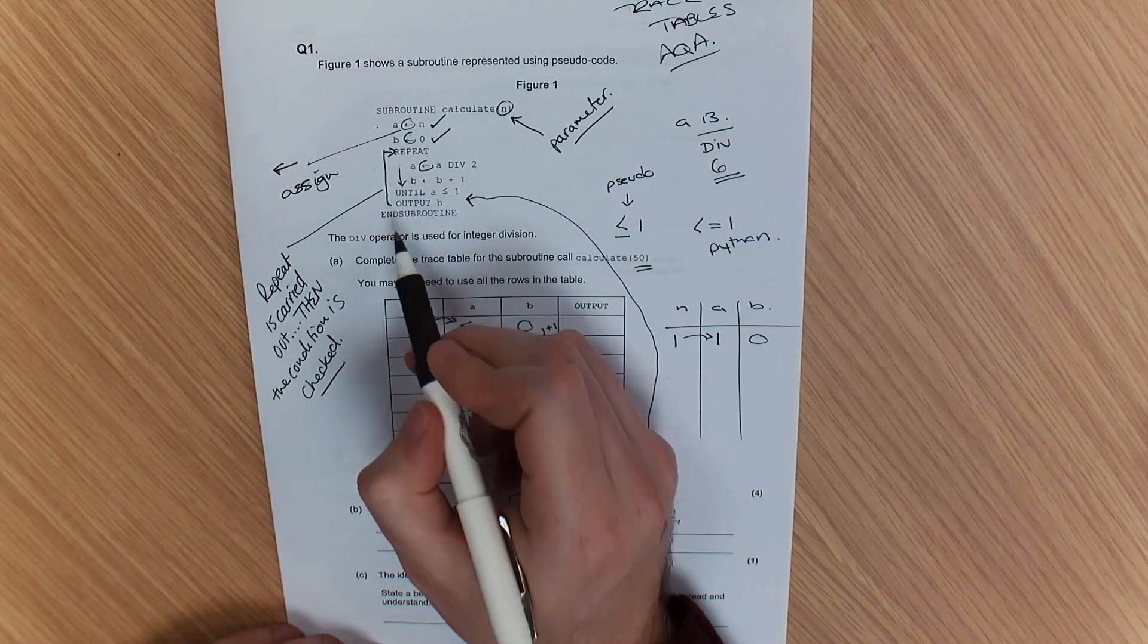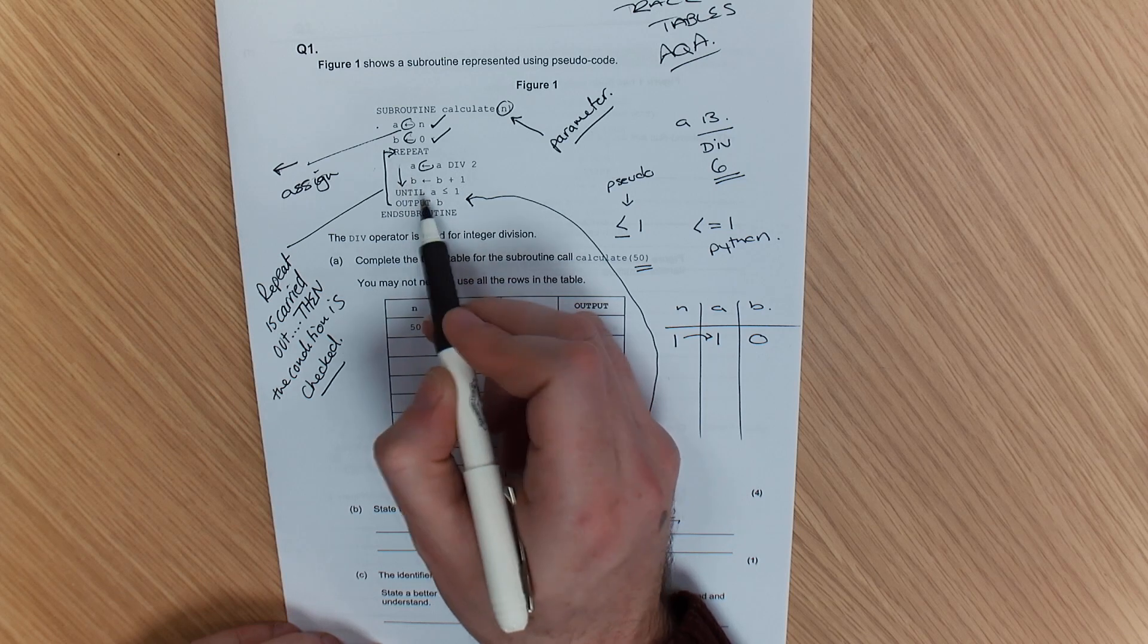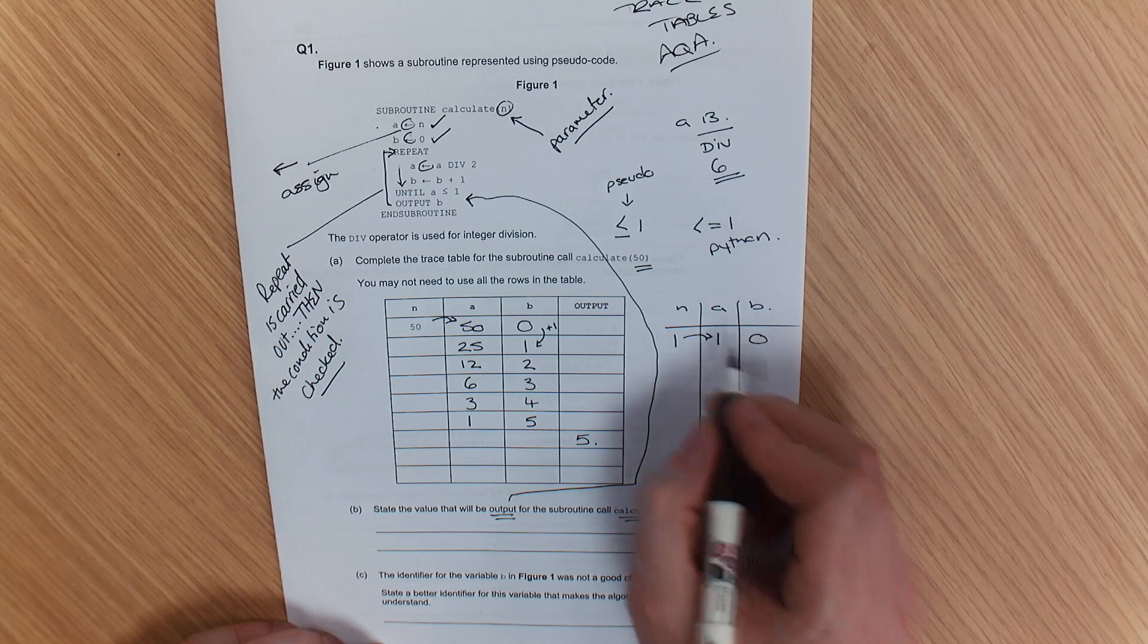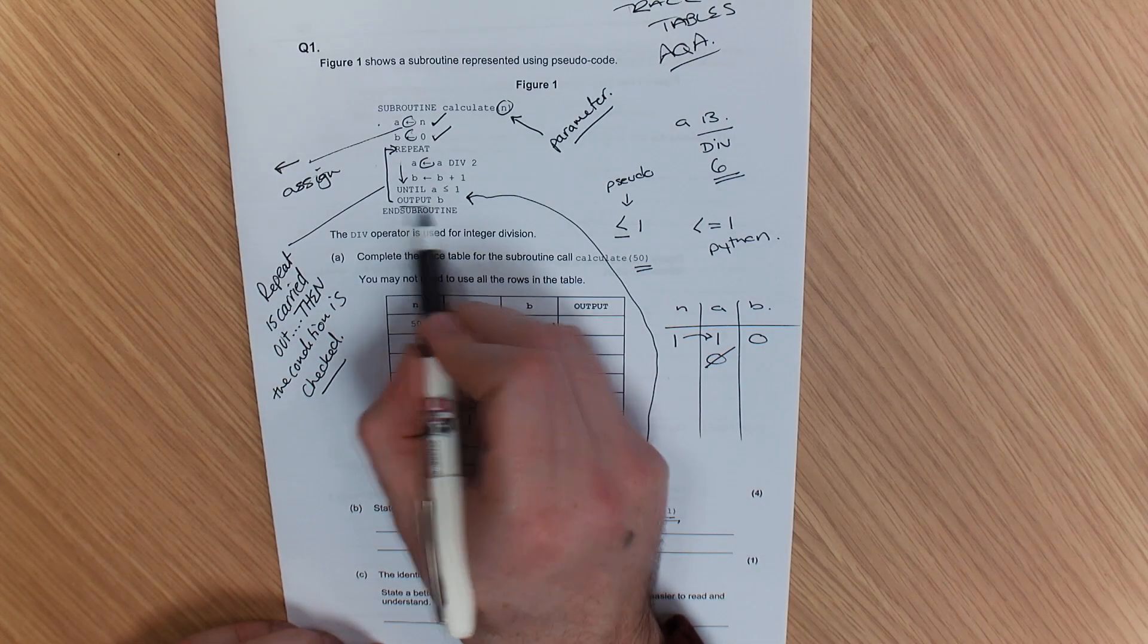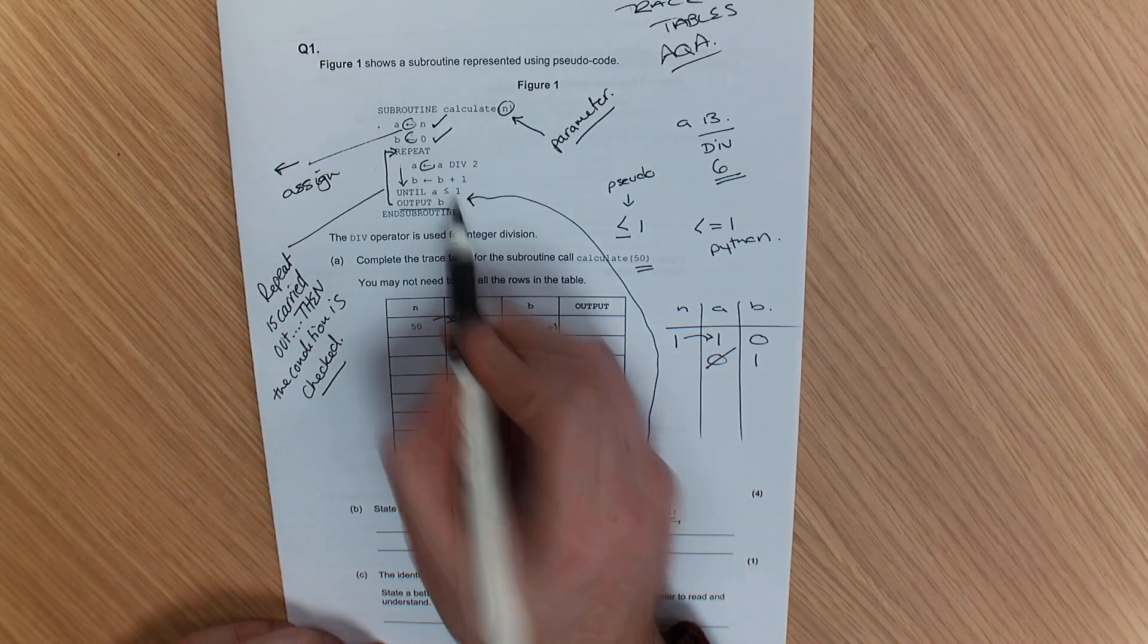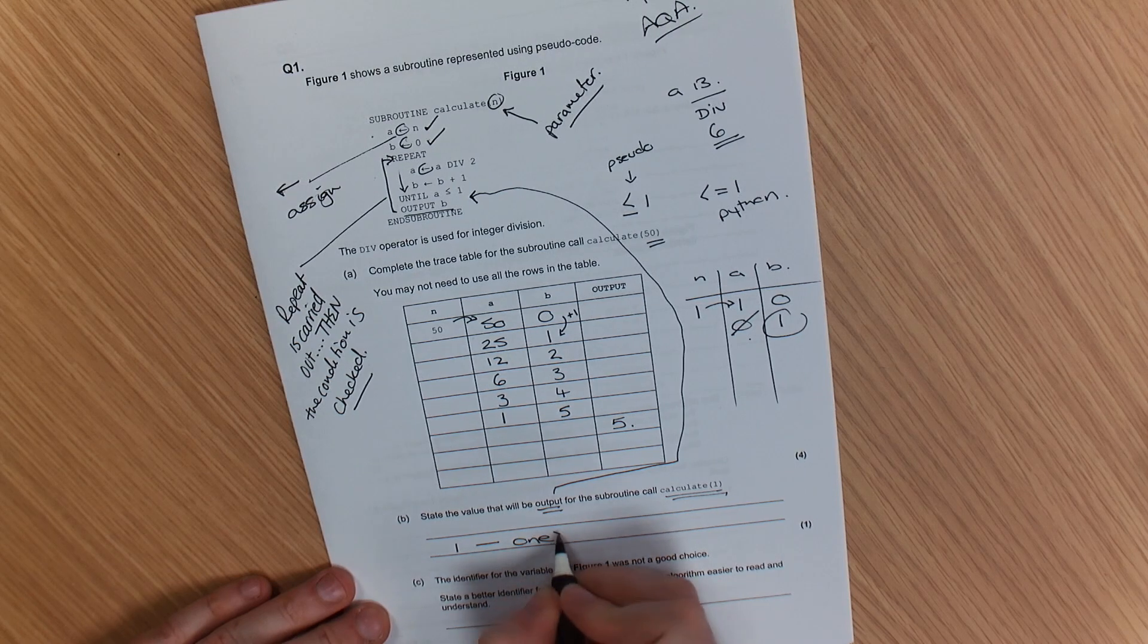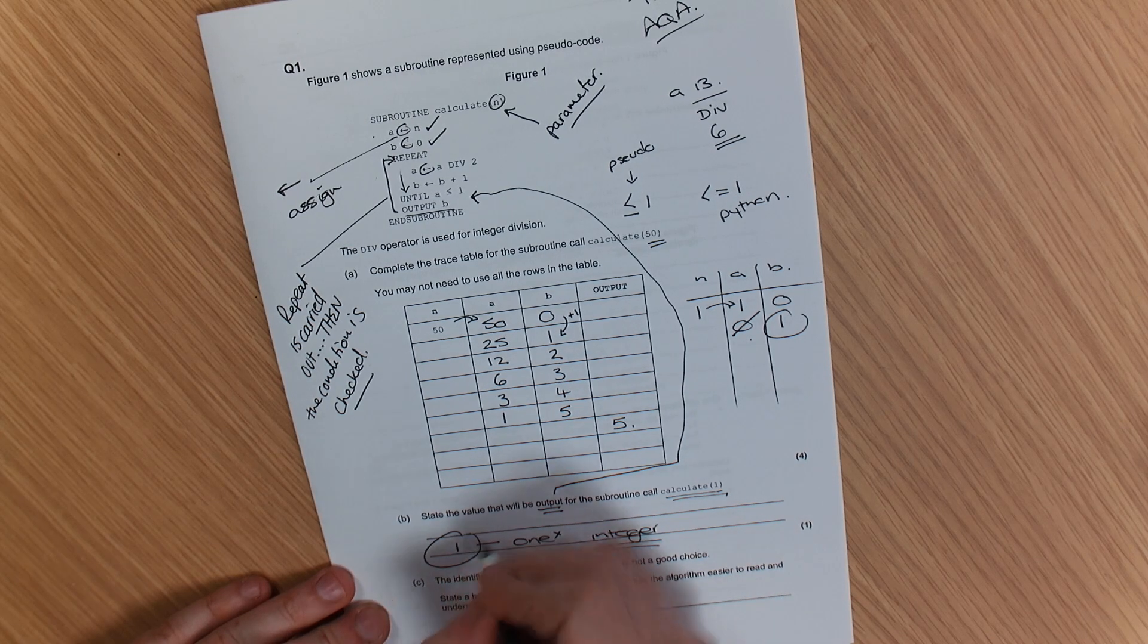Remember, the key thing about this type of loop is it does all of the code before. Before it checks the condition. So have a look here. A is A div 2. Well, A divided by 2. Unfortunately, we're going to end up with a 0 there. But we're not looking at this. We're looking at the output, which is a B. B goes up by 1. Then, A is less than or equal to 1. So it outputs B. So output of B would be 1. Do not write 1. This is bad because we are working with an integer. So we need to use an integer. So this is your answer here.